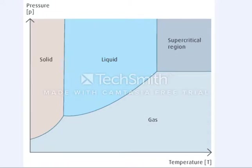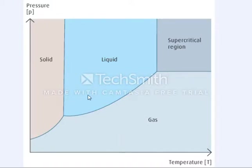Besides the triple point, there are three lines on the phase diagram which show various phase changes. The line between solid and liquid shows where freezing occurs going from liquid to solid, or melting occurs going from solid to liquid. The line between liquid and gas is where evaporation occurs going from liquid to gas, and condensation occurs in the other direction going from gas to liquid.